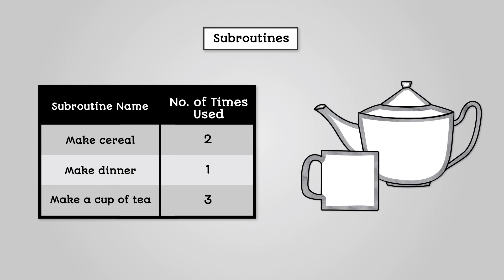The thing is that we would write the code for make a cup of tea only once but then use it three times. This is because you generally make a cup of tea in the same way.